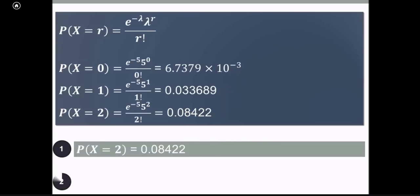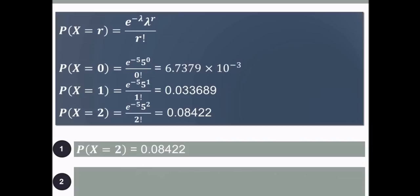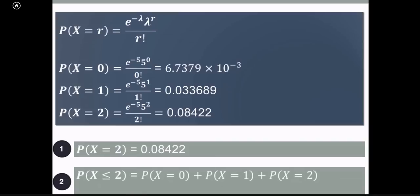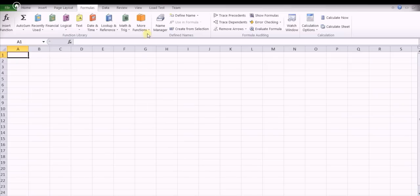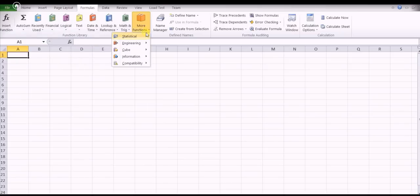The next value we have to find out is the cumulative distribution function, that is probability of x less than or equal to 2. That is the summation of probability of x equal to 0, plus probability of x equal to 1, plus probability of x equal to 2. We substitute all these values which we have already calculated and we will get the required answer as 0.1242.